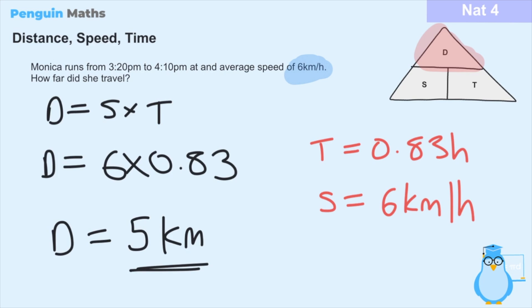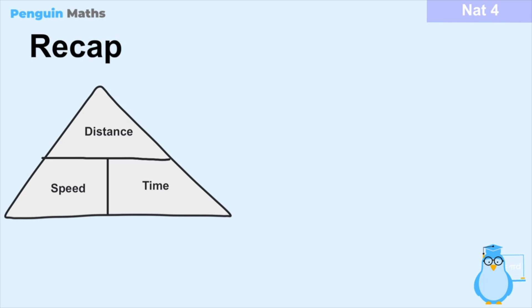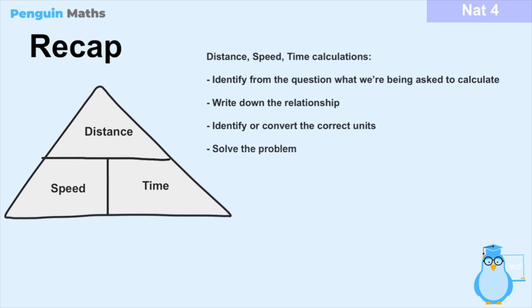The key thing with questions like these is to bear in mind the units and how to get information into the correct form for the distance-speed-time triangle relationship. To recap: if we have any object moving from point A to point B, we can measure its distance, speed, and time — all related through the DST triangle, with distance on top and speed and time on the bottom. When solving any problem, always identify from the question what you're being asked to calculate: 'how long' means time, 'how far' means distance, and 'average speed' or 'how fast' means speed.